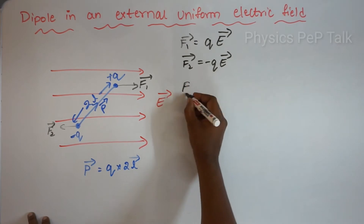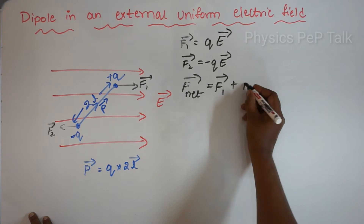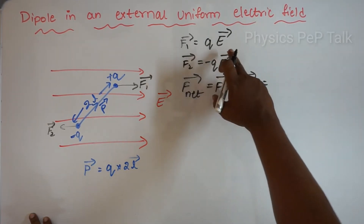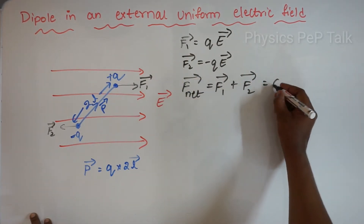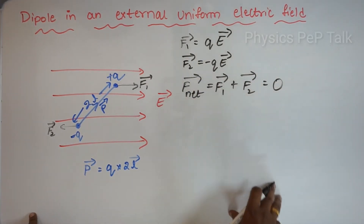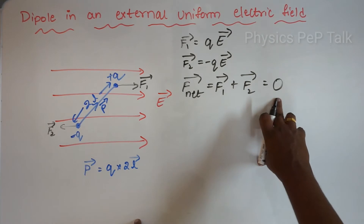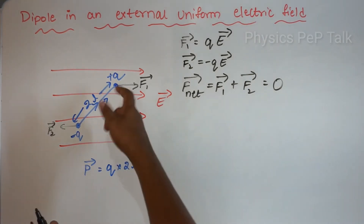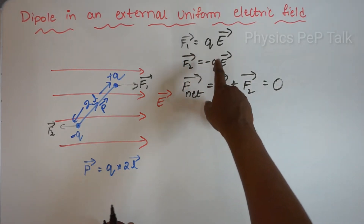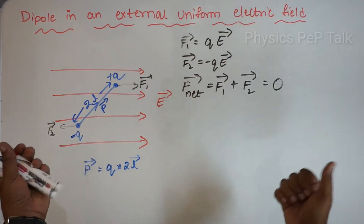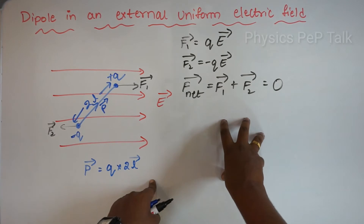The net force acting on the dipole is F1 plus F2, which equals qE plus minus qE, so the net force acting on the dipole becomes zero. The net force acting on the dipole when placed in a uniform electric field is zero. Both forces have equal magnitude but opposite directions — such a force constitutes a couple.